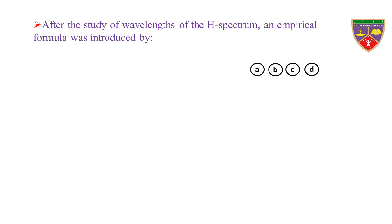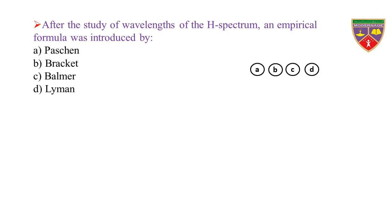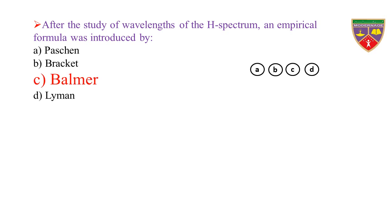After the study of wavelengths of the hydrogen spectrum, an empirical formula was introduced by: Option A, Paschen; Option B, Brackett; Option C, Balmer; Option D, Lyman. The key is Balmer. Therefore, the correct option is C.